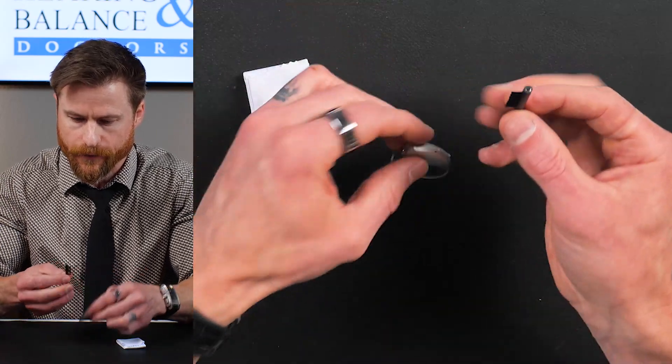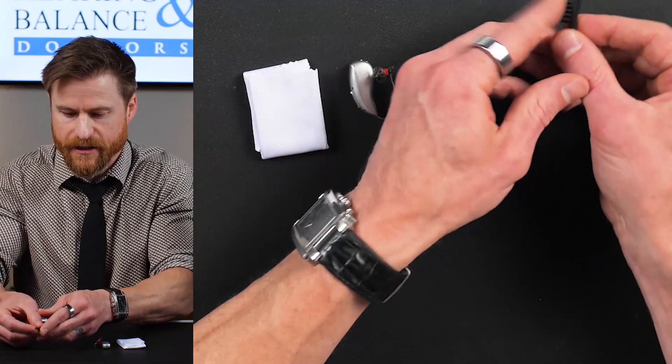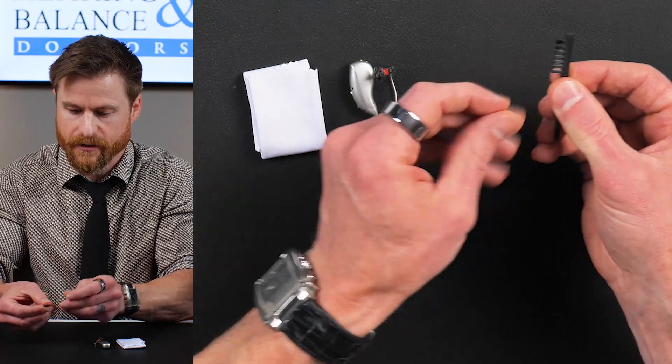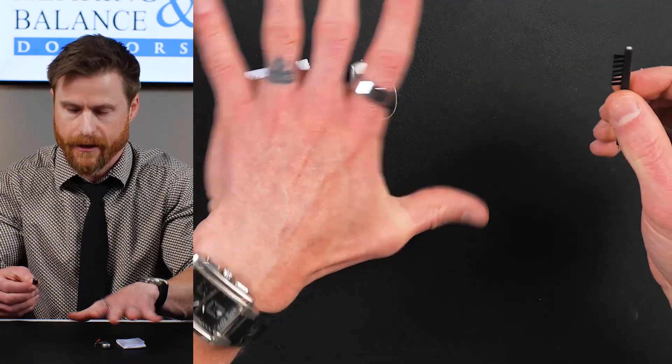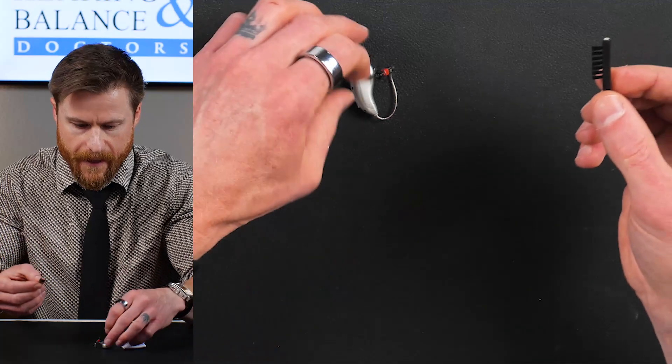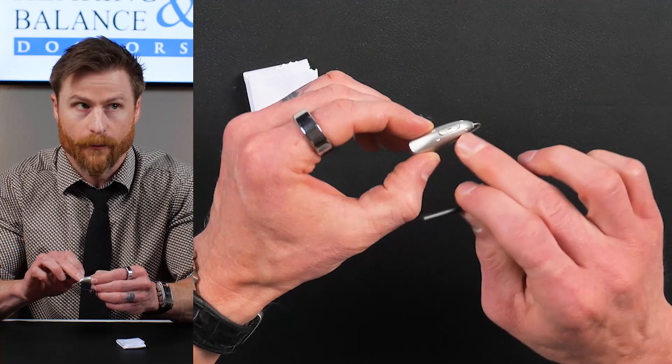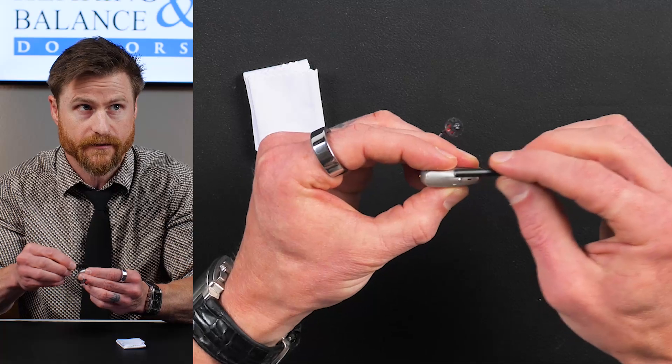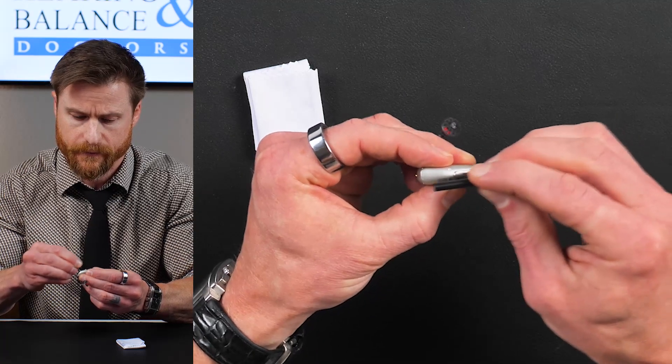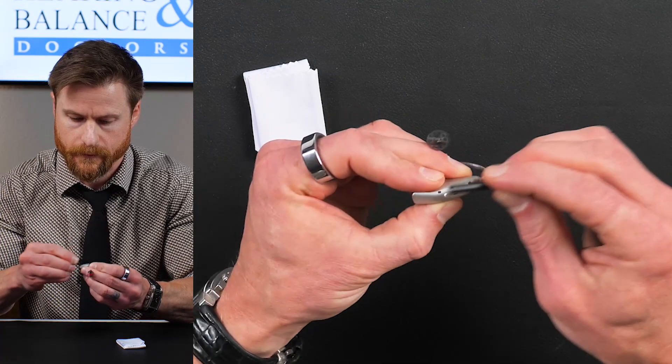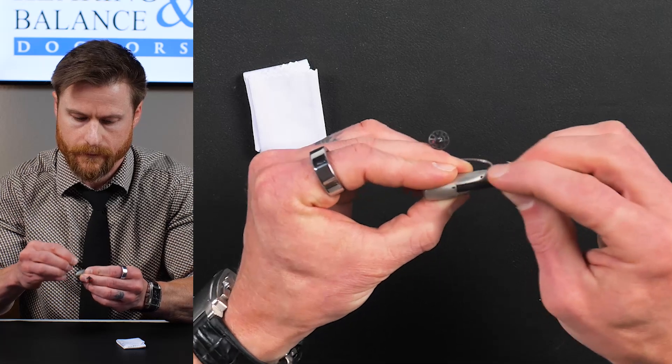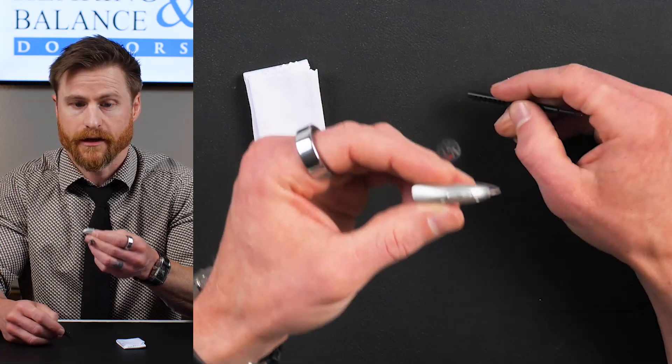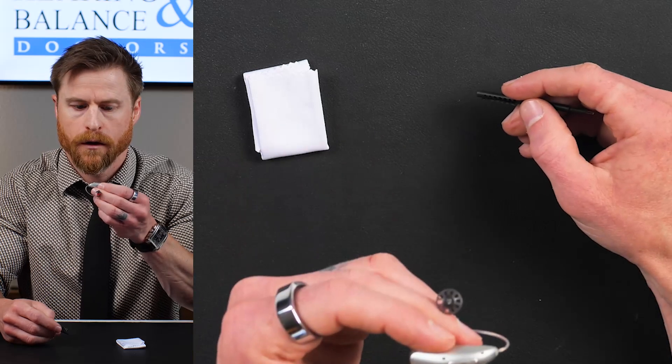So the first thing you should do is, this is what I do. I kind of just brush these bristles in the morning before I even touch the hearing aid to get off any other stuff that was left on. And then I get the microphone ports first. So you can just go across, just like this. Just across. And then I just go like this at the end, really quick.